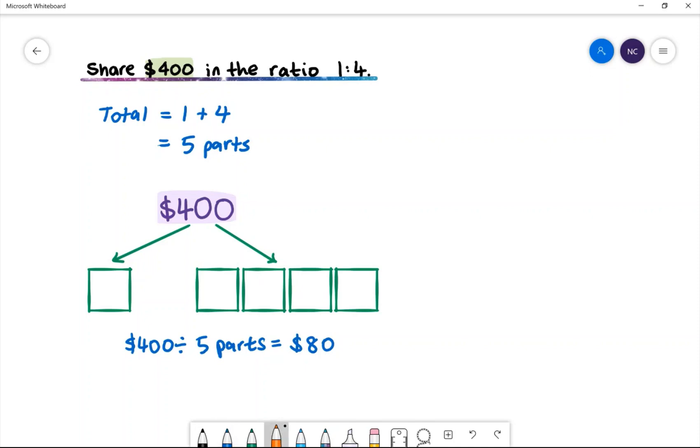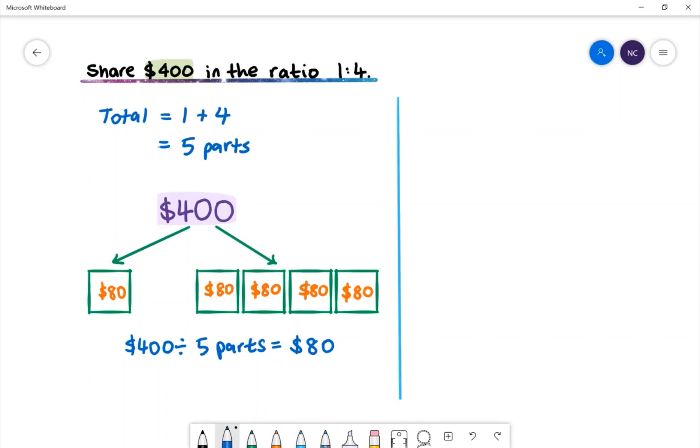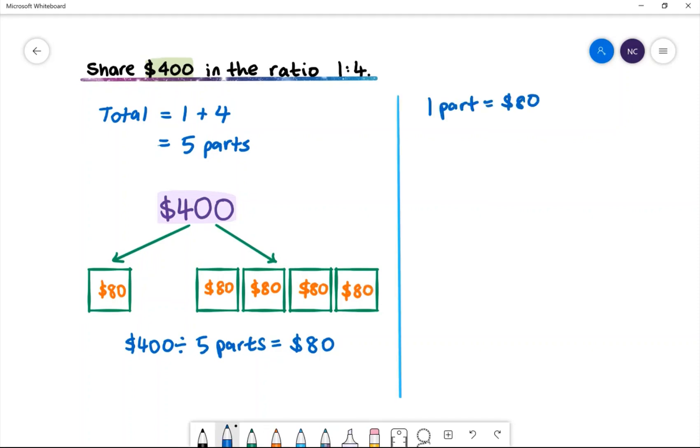We can put this into our diagram. 1 part is worth $80. To find out how much 4 parts is worth, we can do 4 multiplied by $80. 4 parts is worth $320.